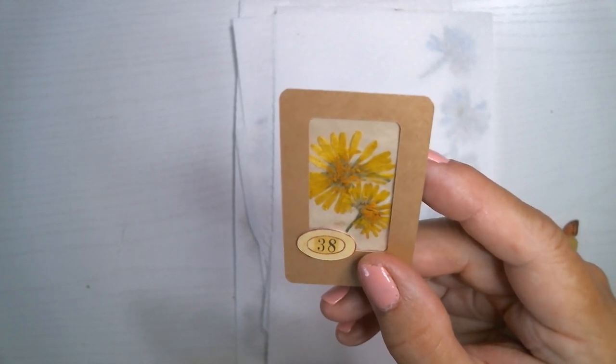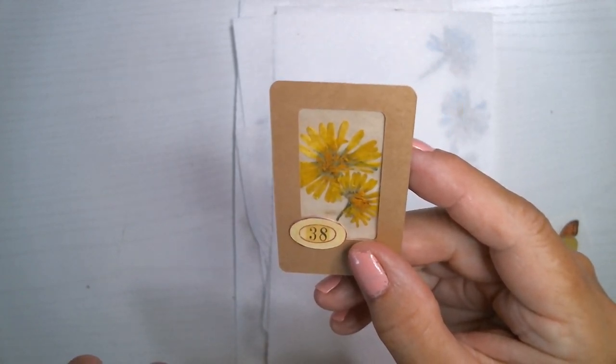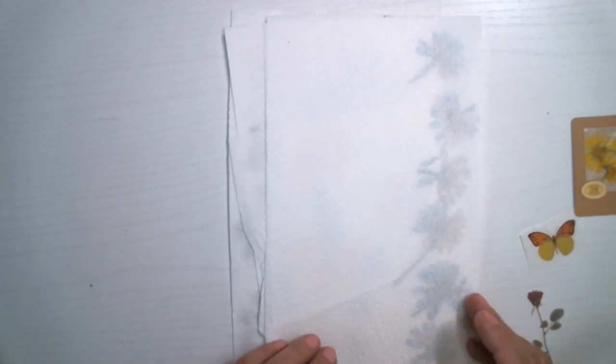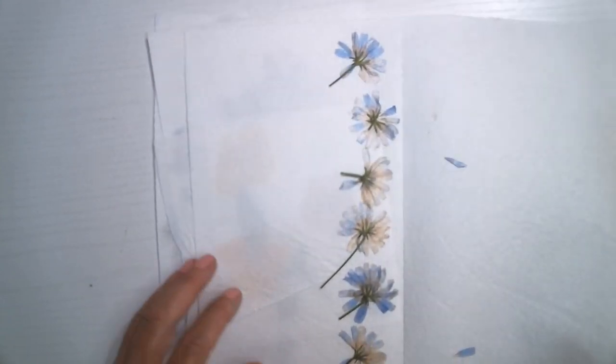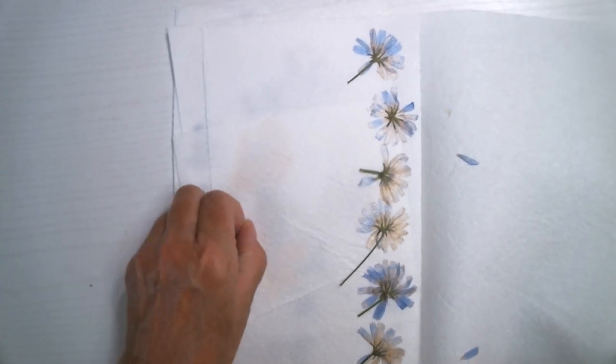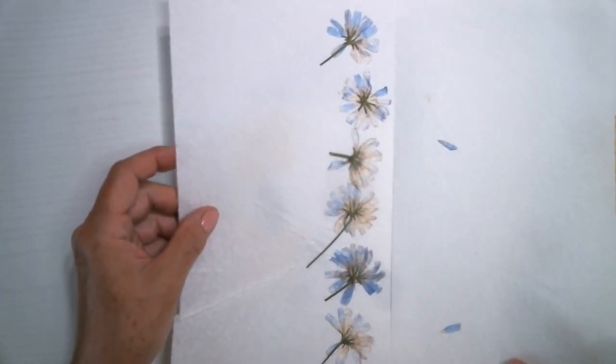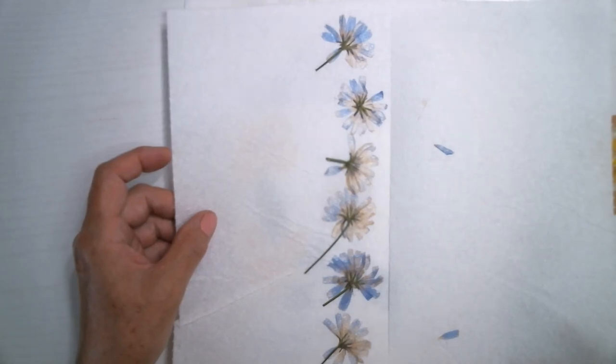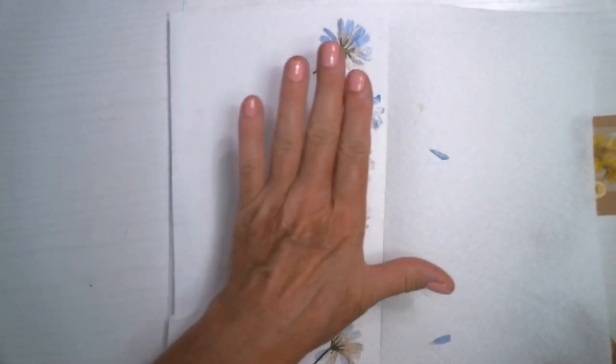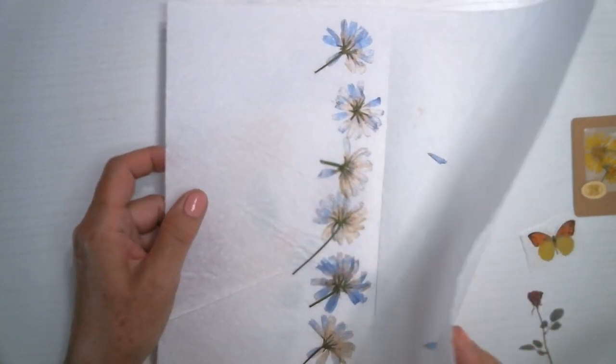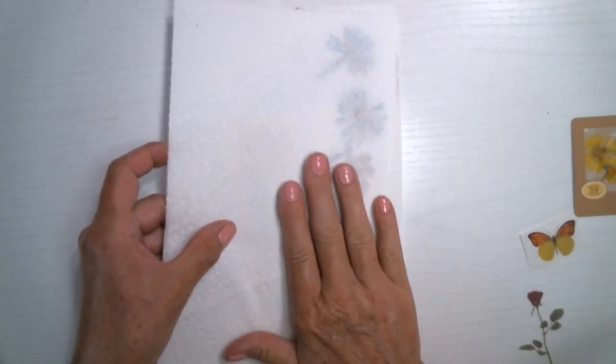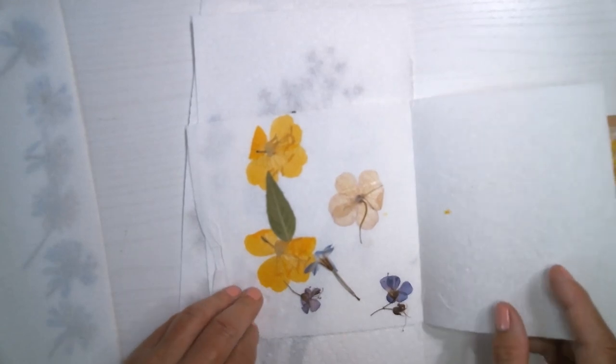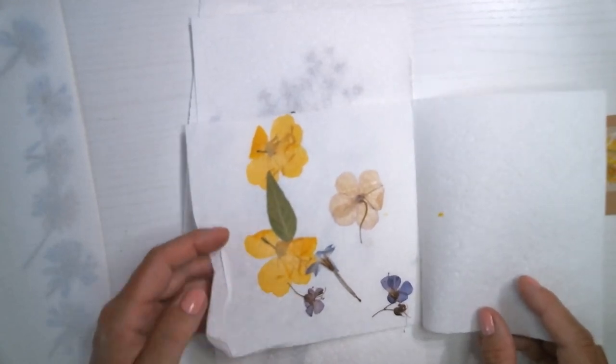So for my centerpiece, I used real pressed flowers. And the way I did that is I go out in my garden and, or walk along the road, whatever, and I pick flowers. Not ones with dew on them. You want something that's relatively dry. And then I put them on a paper towel and fold it in half so it's got a paper towel on both sides and I put it inside a heavy book. And that is wonderful free junk journaling supply right there.